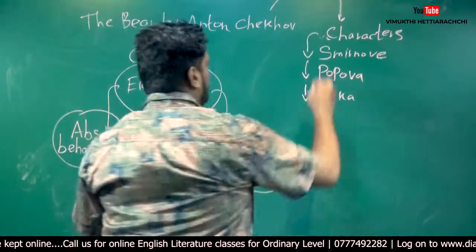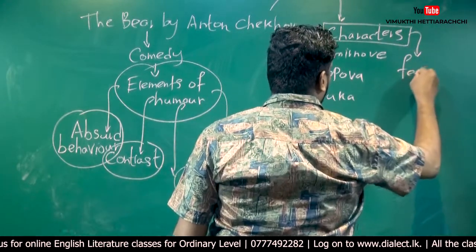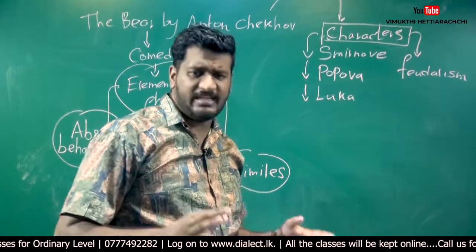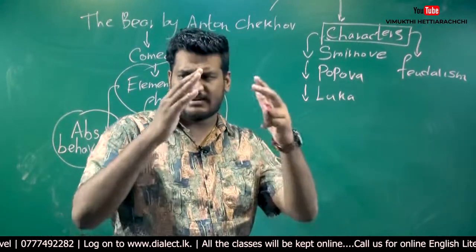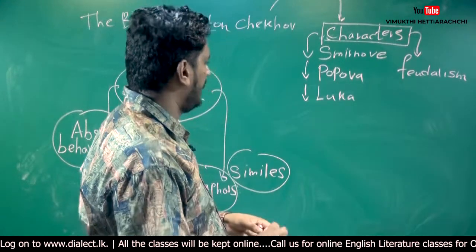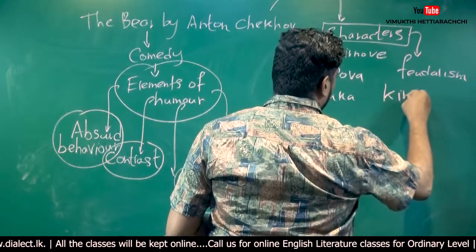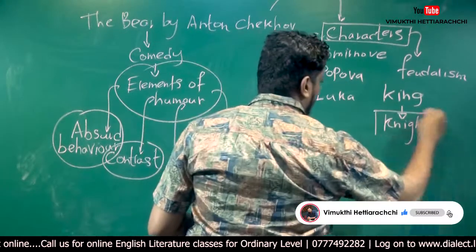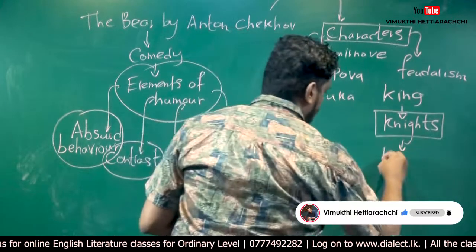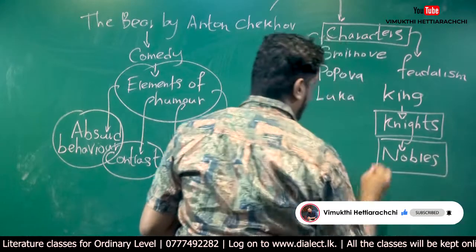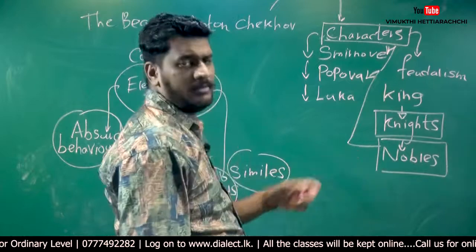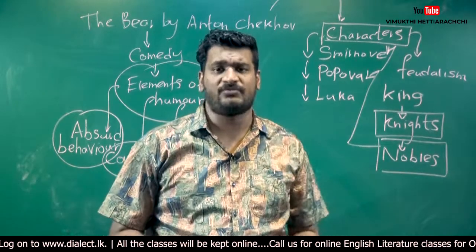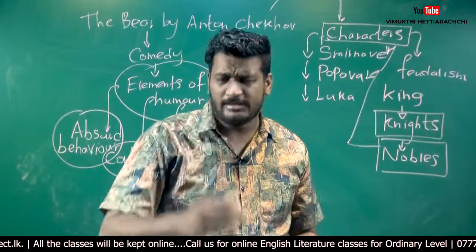These characters clearly explain the concept of feudalism in Russian society. At that time we can see several social classes in Russian society. Under the king, instead of knights, Russian society had a lot of nobles. Both Popova and Smirnov belong to noble families — they had a lot of property, fine horses, and most of these people owned guns. They had been given the authority to use guns. These things are very important.